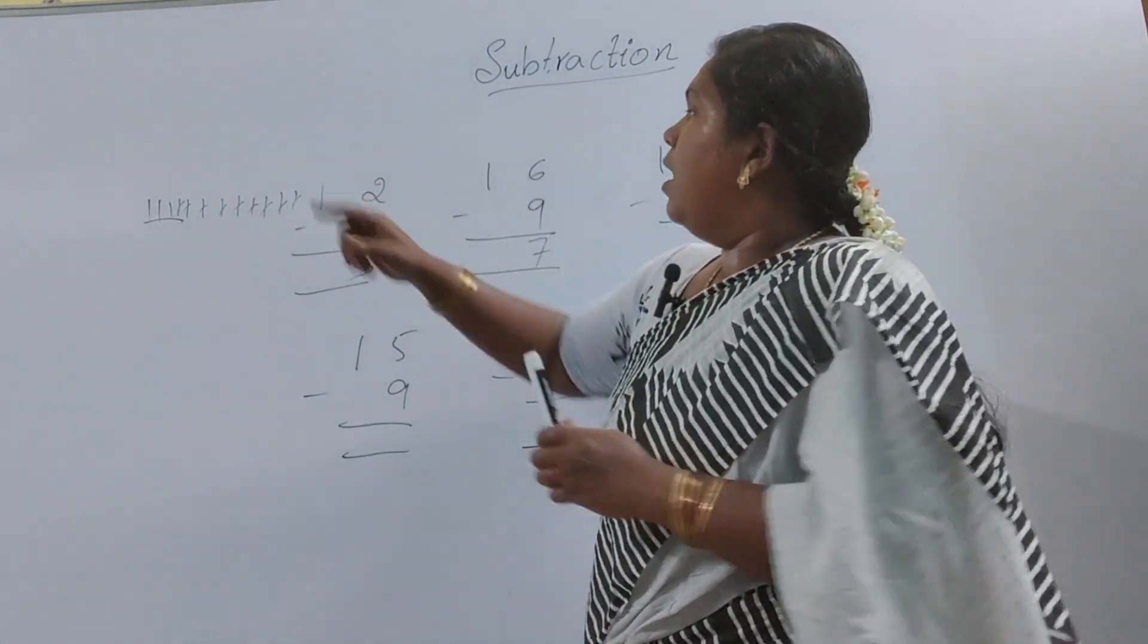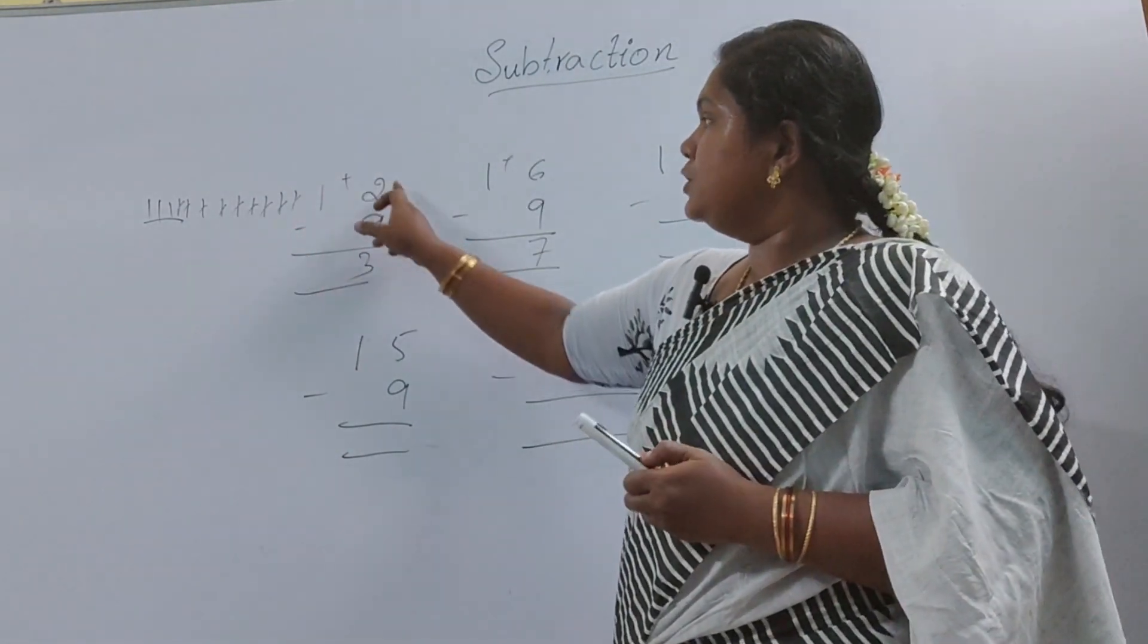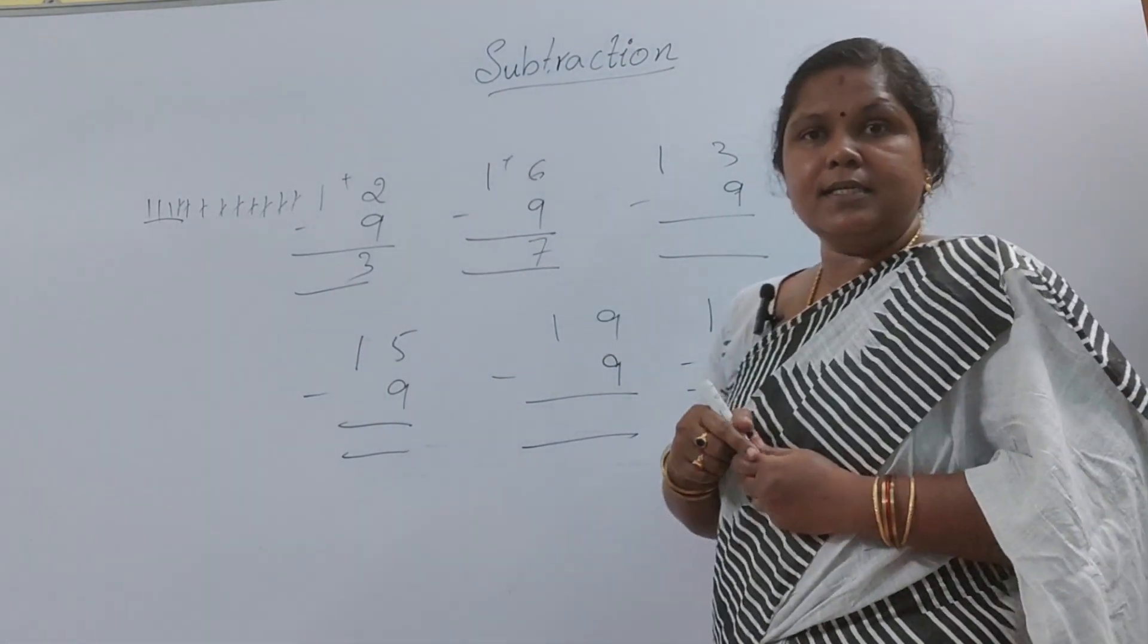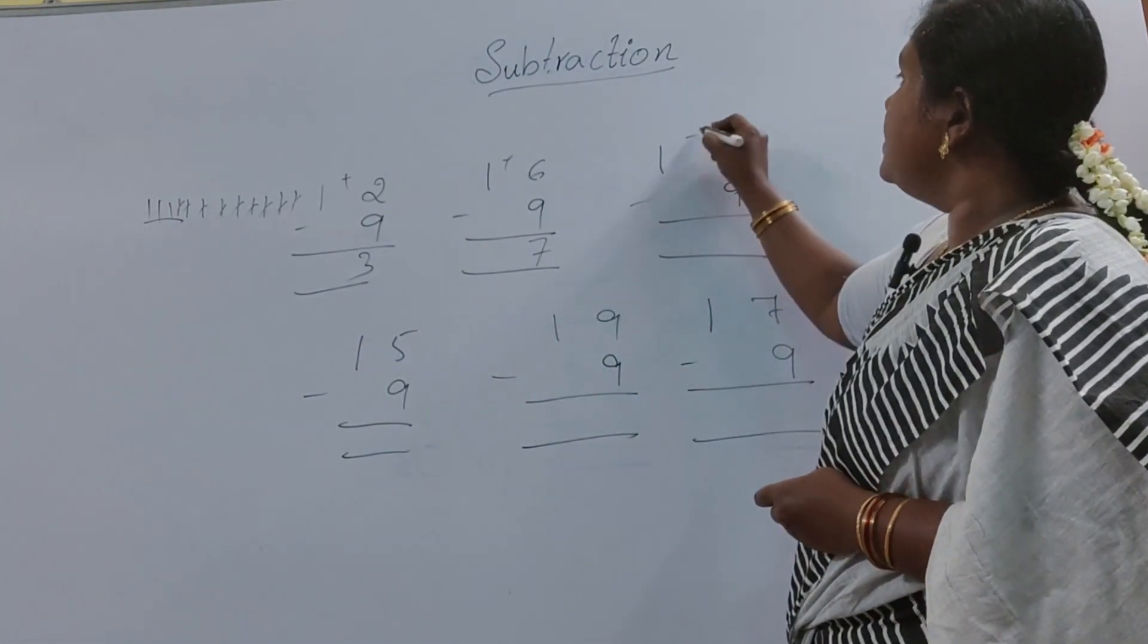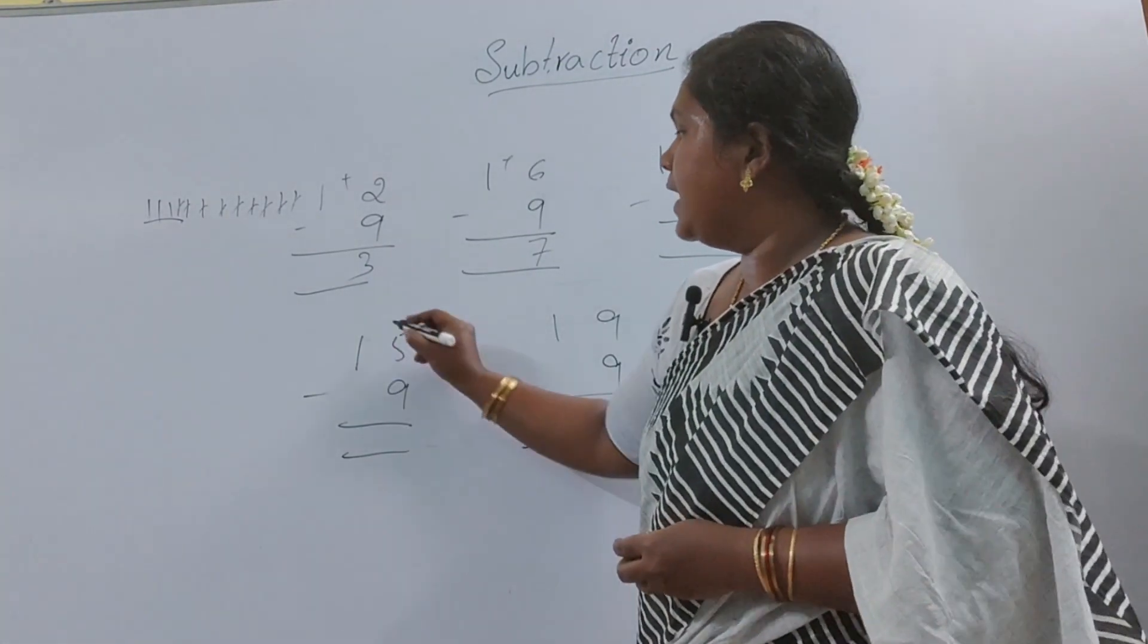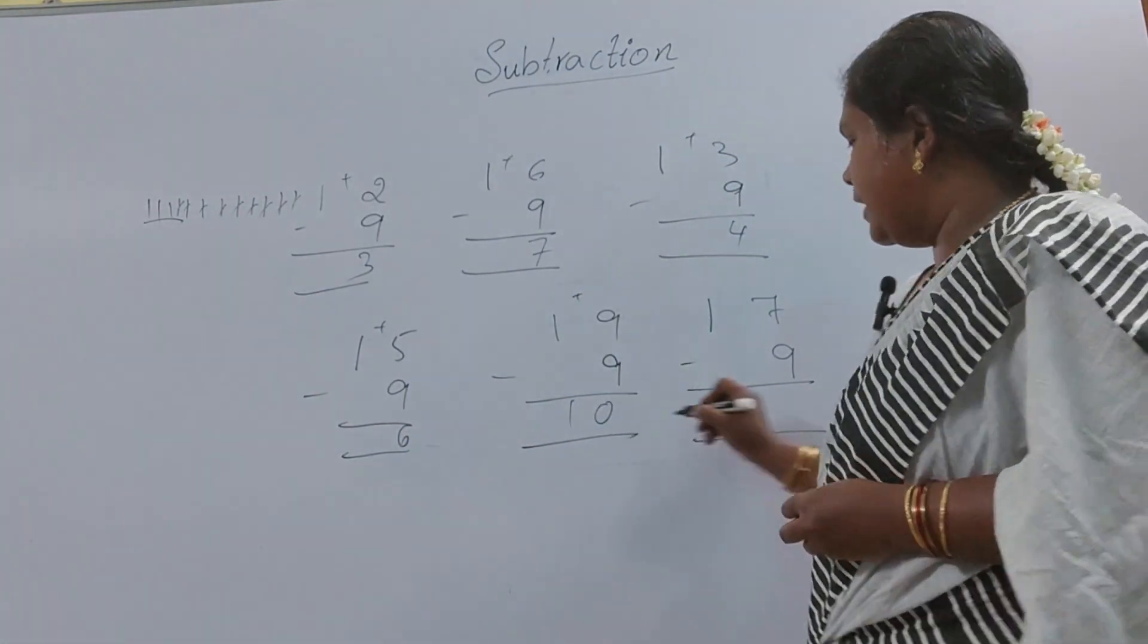See, just go on adding the upper digit you will get the number. 1 plus 2 the answer is 3. 1 plus 6 the answer is 7. Here 1 plus 3 the answer is 4. Here 1 plus 5 the answer is 6. 1 plus 9 the answer is 10.